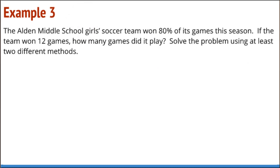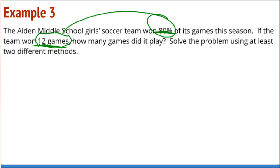Example three: The Alden Middle School girls soccer team won 80% of its games this season. If the team won 12 games, how many games did it play? Solve the problem using at least two different methods. We have a different situation here — I know that 12 games is equal to the 80%. They won 80%, they won 12 games. I have to think about how I'm going to scale this up to be 100%, because that's the question I have to answer.